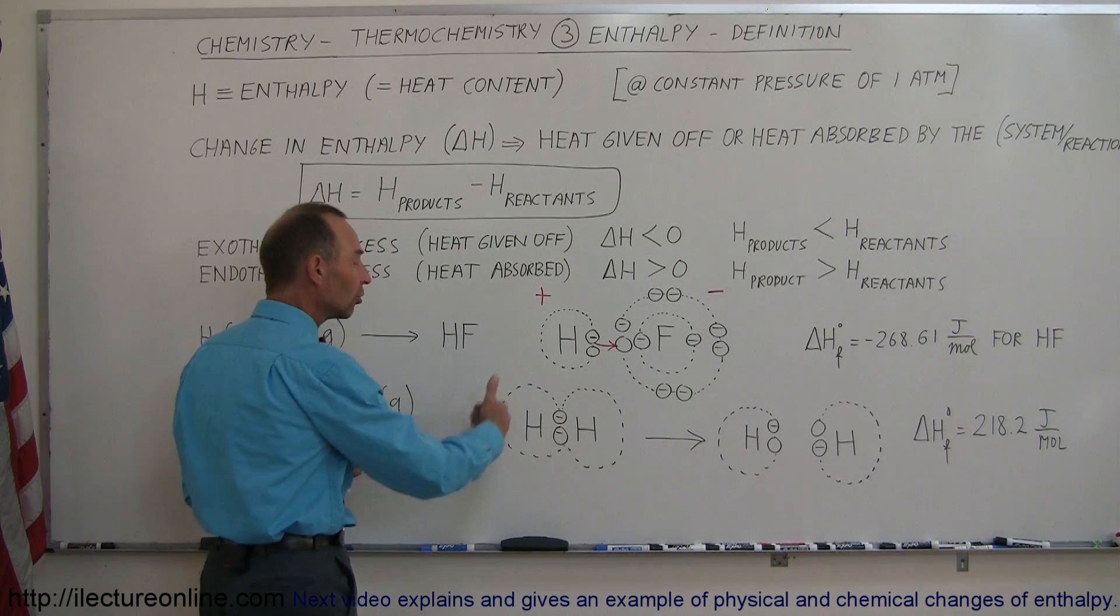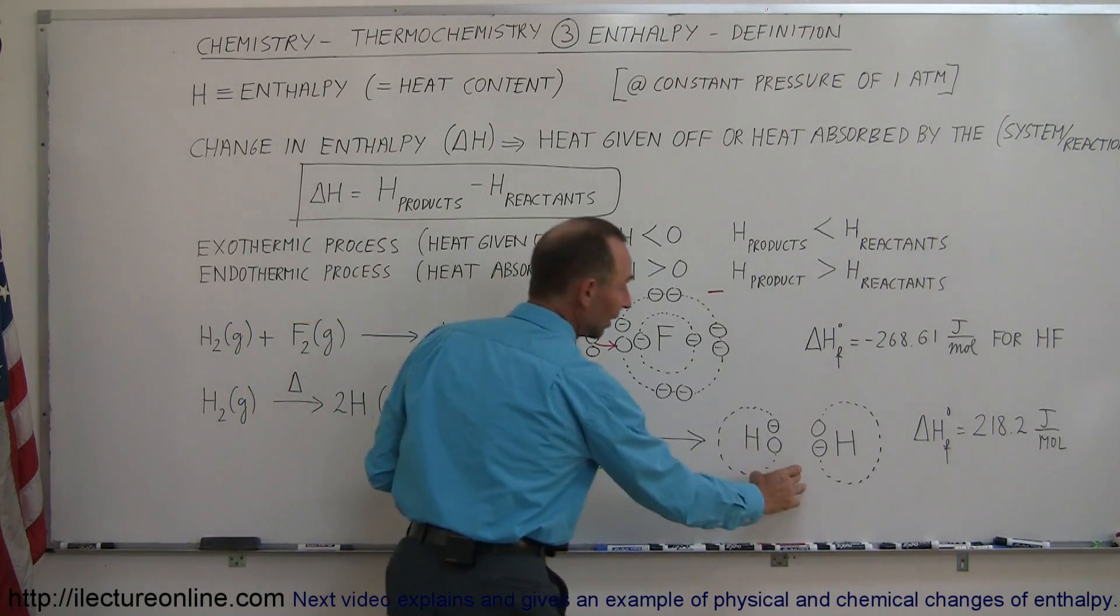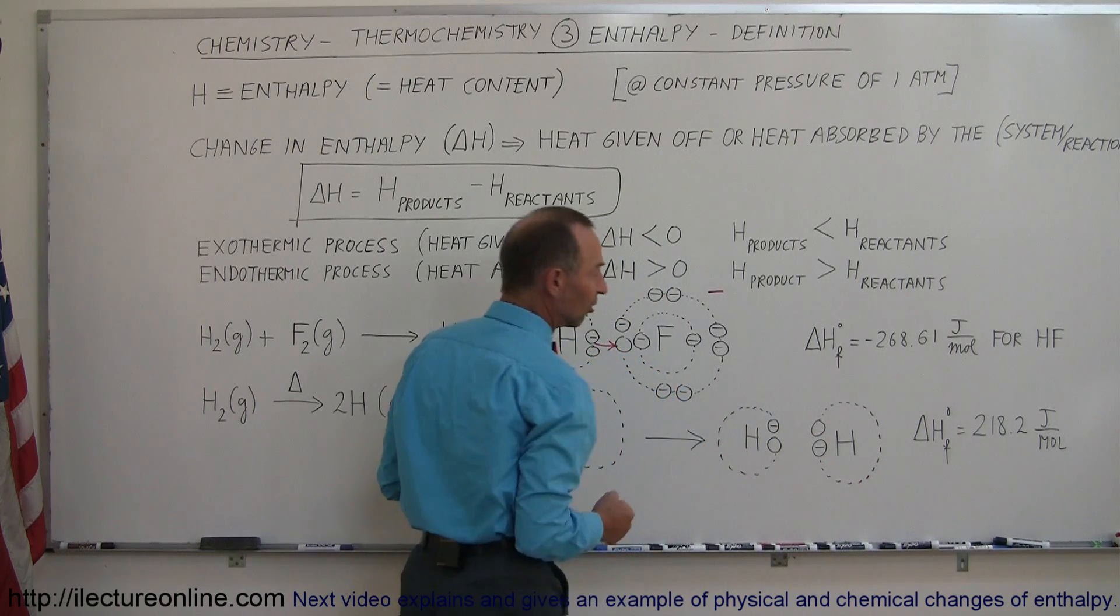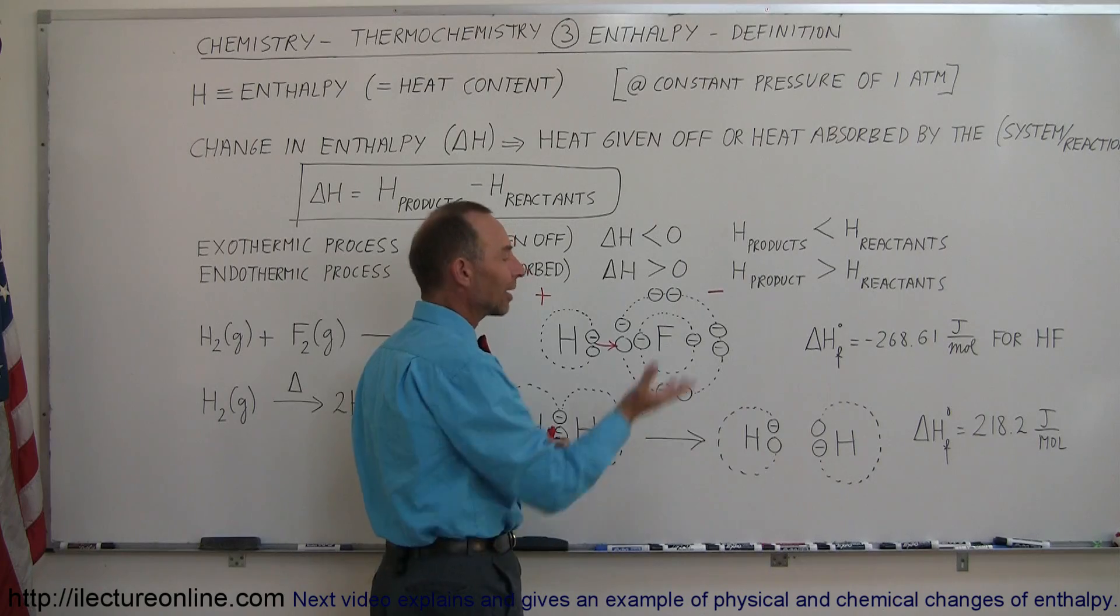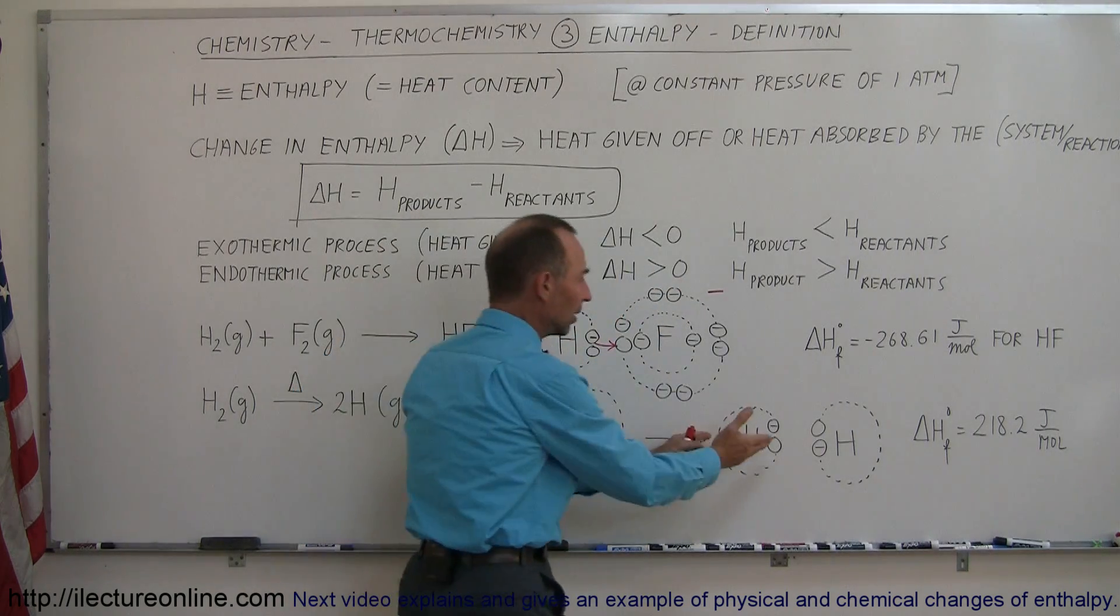But if they pull them apart and make it look like this, then they each have one electron missing in their valence band of the first energy level. So that's not a preferred situation for hydrogen.